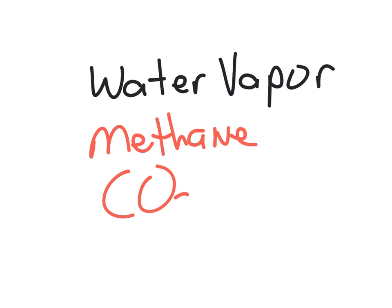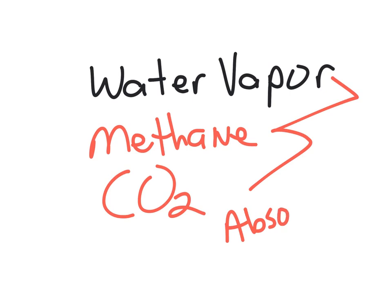Another key gas is carbon dioxide, which we normally refer to as CO2. All of these — water vapor, methane, and CO2 — have some effect in the atmosphere. Number one, all of them will absorb energy, and since the Sun is the primary source of energy, they have a lot of it to absorb.